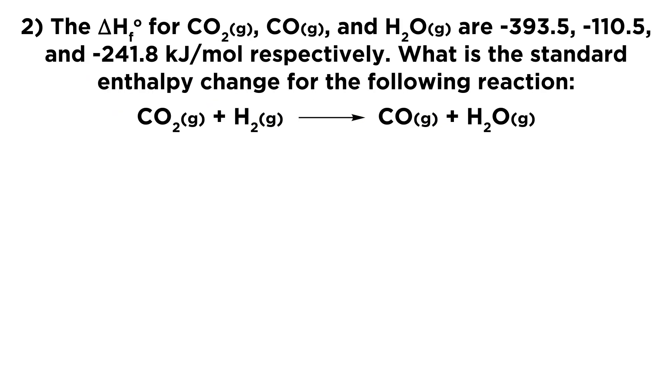Now for number two, we're looking at this reaction, and we want to find the delta H of this reaction, and we have heat of formation data. So we should recall that we can get the delta H of the reaction by taking the sum of the heats of formations of the products, and subtracting from that the sum of the heats of formation of the reactants. And so all we have to do is plug in the values that we have.